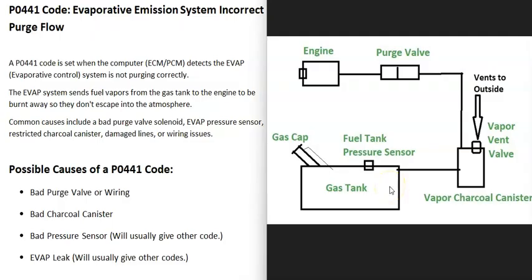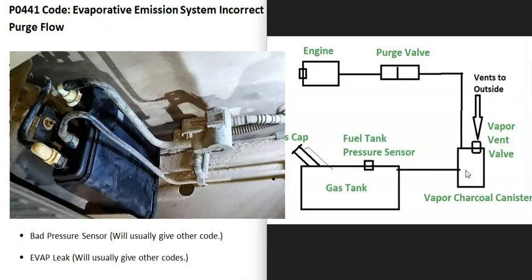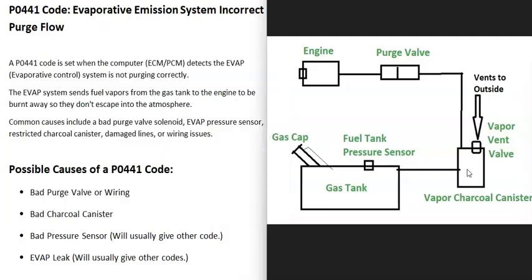The basics of how these systems work: the gas vapors leave the gas tank, go through a hose over to what's called a charcoal canister. The charcoal canister is kind of like storage for the gas vapors. Located with the charcoal canister, or separately, is what's called a vent valve. The computer can use the vent valve to test the system.